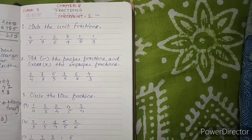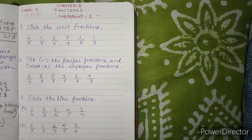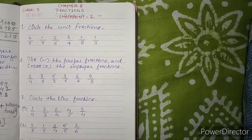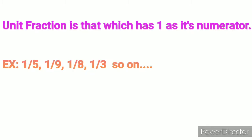Question number 1: Circle the unit fraction. So first let us understand what is a unit fraction. A unit fraction is one which has 1 as its numerator. For example, 1 by 5, 1 by 9, 1 by 8, 1 by 3, and so on.